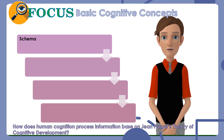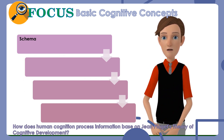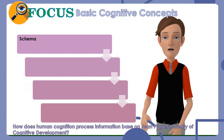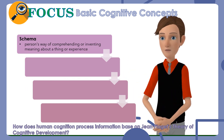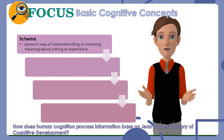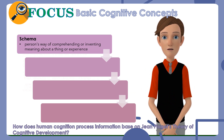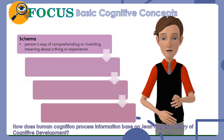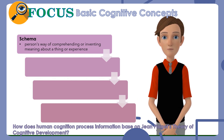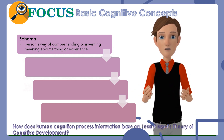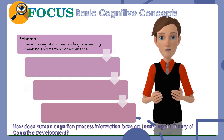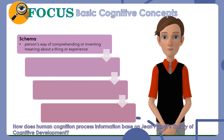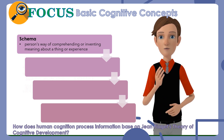Schema: The term schema was coined by Piaget to refer to the cognitive structures that individuals use to intellectually adapt to and organize their environment. It is a person's way of comprehending or inventing meaning about a thing or experience — like a mental filing cabinet. For example, when a child sees a dog for the first time, he forms his own schema about what a dog is: it has four legs and a tail, it makes a bark, it has fur. When he sees another similar dog, he pulls out his dog schema and says: four legs, tail, barks, furry — that's a dog.